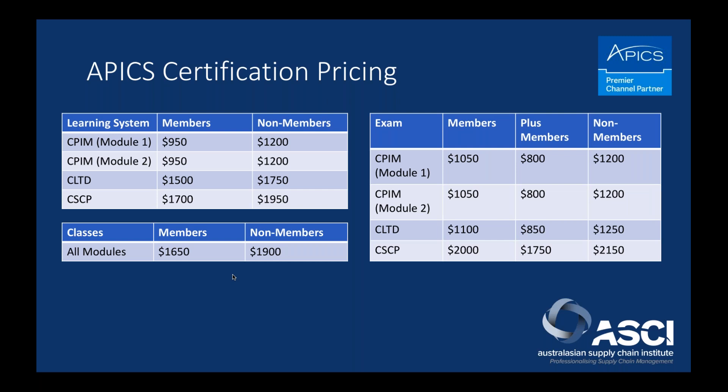For example, if you're a member purchasing CPIM module one, the learning system is $950 and will be express-posted to you. If you then decide you want to attend a class, register via our website — we've just posted a full 2018 certification course schedule so you can plan ahead. The class costs $1,650 for members or $1,900 for non-members, regardless of duration or location — one standard price. When you attend class you'll also receive a slide pack: a spiral-bound book with all the facilitator's slides and space for notes, so you may not need to bring the full learning system to class.